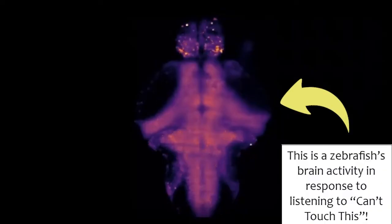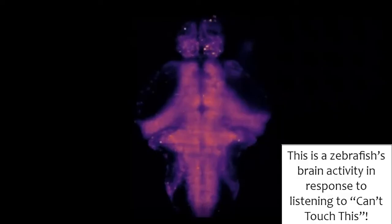In a recent study, scientists studied baby zebrafish called larvae and their ability to perceive sound. They used zebrafish that had a fluorescent protein in their brain, and every time a neuron fired, the cell would light up. By looking at which cells lit up in response to different sounds including the song Can't Touch This, the scientists discovered that zebrafish larvae can hear a wider range of sound than previously thought.